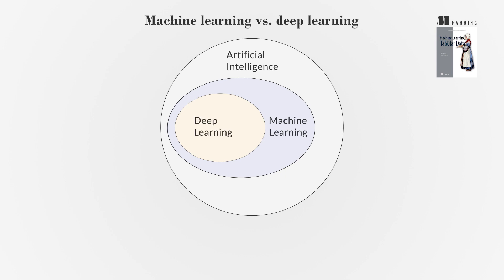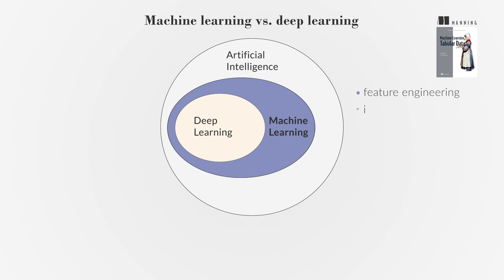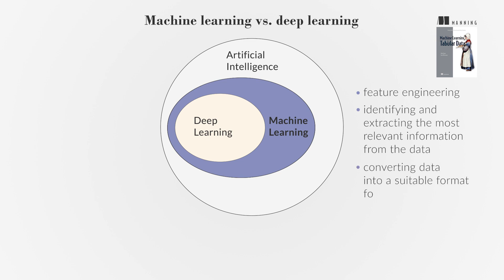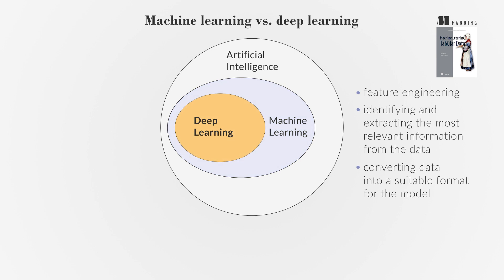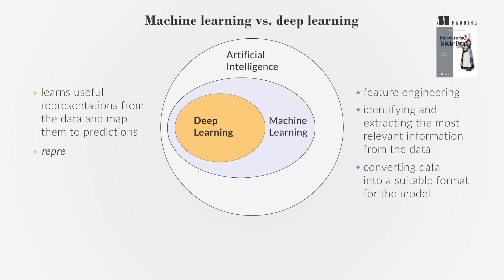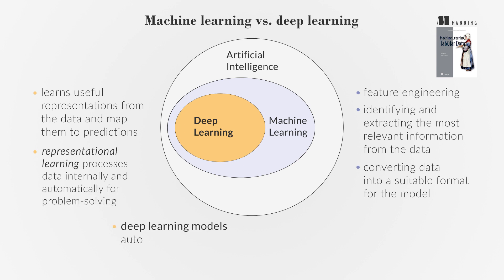Machine learning and deep learning are two distinct approaches to tabular data modeling. Machine learning involves feature engineering — identifying and extracting the most relevant information from the data and converting it into a suitable format for the model. However, deep learning, inspired by how a biological brain is structured, can learn useful representations directly from the data and map them to predictions. Such capability, called representational learning, allows deep learning to process data internally and automatically for problem solving. This means deep learning models can automatically discover intricate patterns and dependencies in the data that may not be apparent through manual feature engineering.